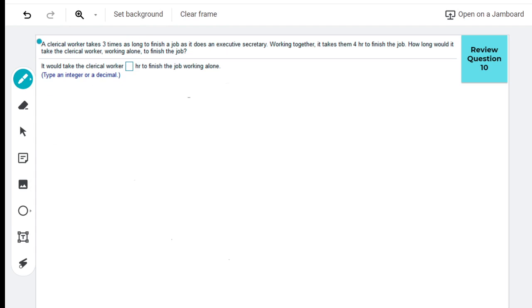So here we go. We have a clerical worker, and let's talk about how it takes her three times as long to finish a job as an executive secretary. And then over here it says working together, it takes them four hours to finish the job. And then it says, how long would it take just the clerical worker working alone to finish the job? So that's going to be our X. So what I want to do is do kind of like an overall picture. We have the clerical worker and we have the executive secretary. And then we have the total because they're working on it together as a group.